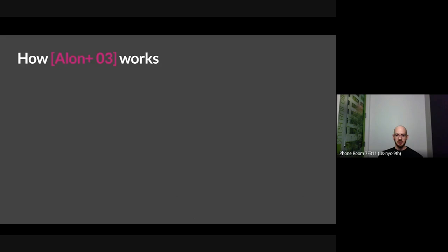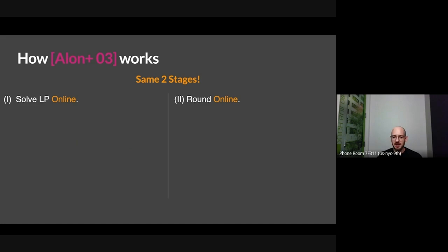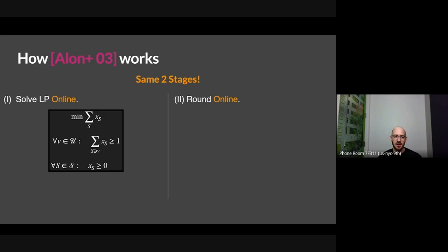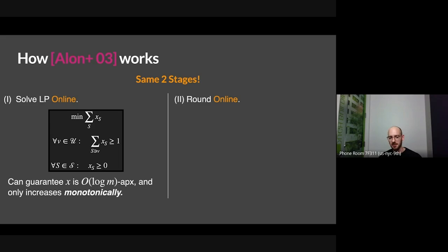How do you do this online? The Alon-et-al algorithm just does the same two stages, but online. The core of their work was showing that you can maintain a solution to this LP as the constraints arrive online — elements arriving correspond to constraints arriving. What they show is you can maintain a fractional solution with two properties: it only ever increases monotonically, and it's always within a log m factor of the optimal LP solution at that point in time.